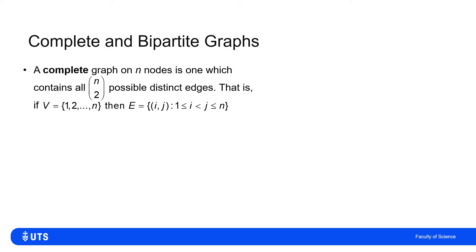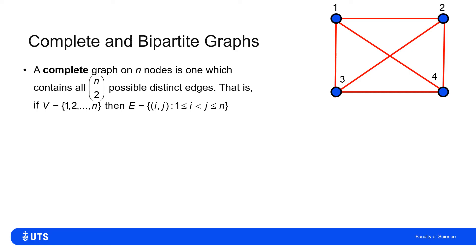We call a graph complete if every possible edge between two distinct nodes is actually in the graph. If we have n nodes, there are n choose two possible different edges. For a four-node complete graph, every node has three edges associated with it, connecting to each of the other three nodes. Four choose two gives six edges — the four sides of the square and the two diagonals.